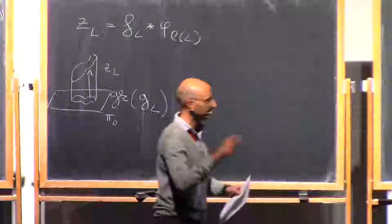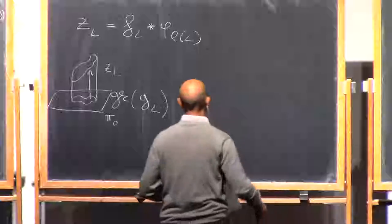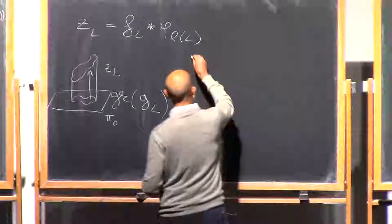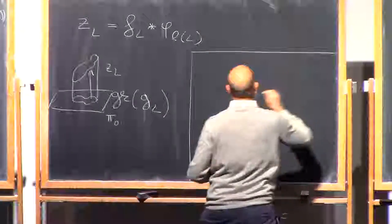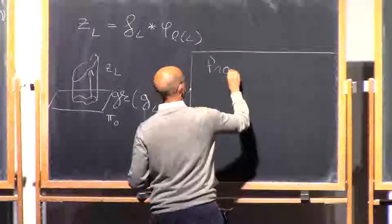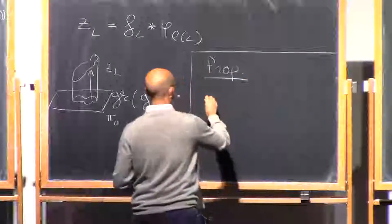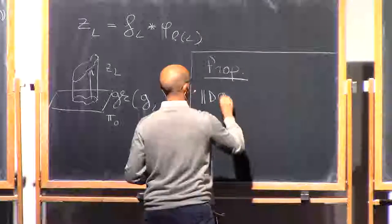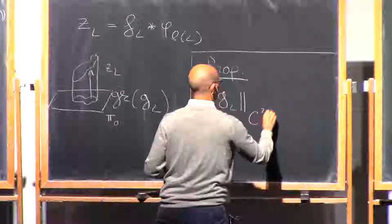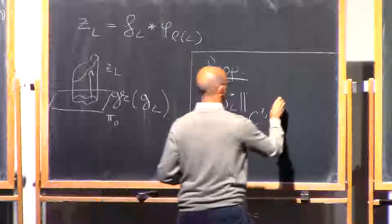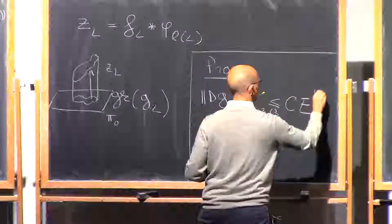I will point out the exact place where this is happening. So from now on the focus is going to be the following proposition. I can actually control the C2 beta norm of the derivative of GL with a constant times the excess to the power one half.